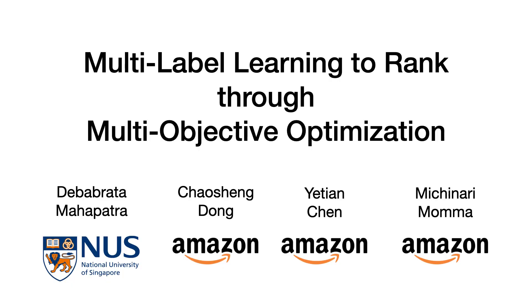Hello there, I am Deb and in this work on multi-label learning to rank through multi-objective optimization, we investigate how machine learning models can be trained to rank based on multiple criteria. This is a joint work with Chaosheng Dong, Yetian Chen, and Michinari Momma.